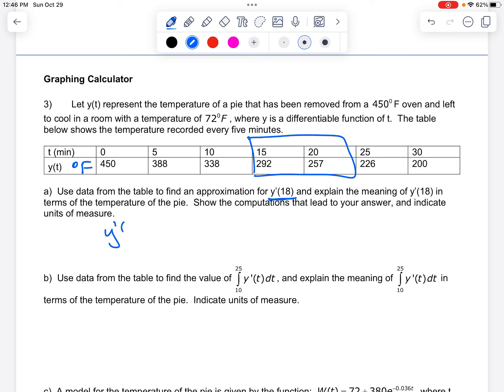So y prime of 18, and again, this is an approximation. The best estimate is going to be the slope between those two points. So I'm just going to do y of 20 minus y of 15 over 257. Oops, sorry, the y values are on the top. So on the bottom, I should have 20 minus 15. So this is going to be negative 7. On the top, we're using our y units, so degrees Fahrenheit. The bottom is our minutes. So that's what I get.